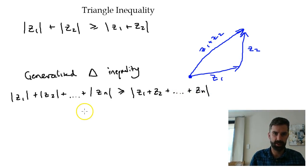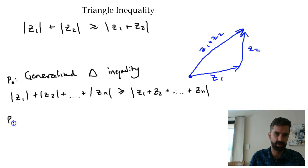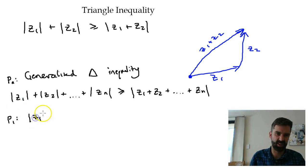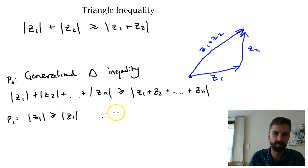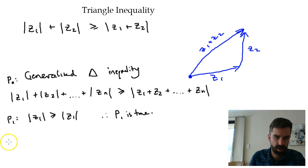We're going to prove this by induction. So if that's our P(n), let's prove P(1) first of all. If it's P(1) we've just got |z1|, and that's going to be greater than or equal to |z1| on the other side — because they're equal, it meets that condition of equality. So therefore P(1) is true.